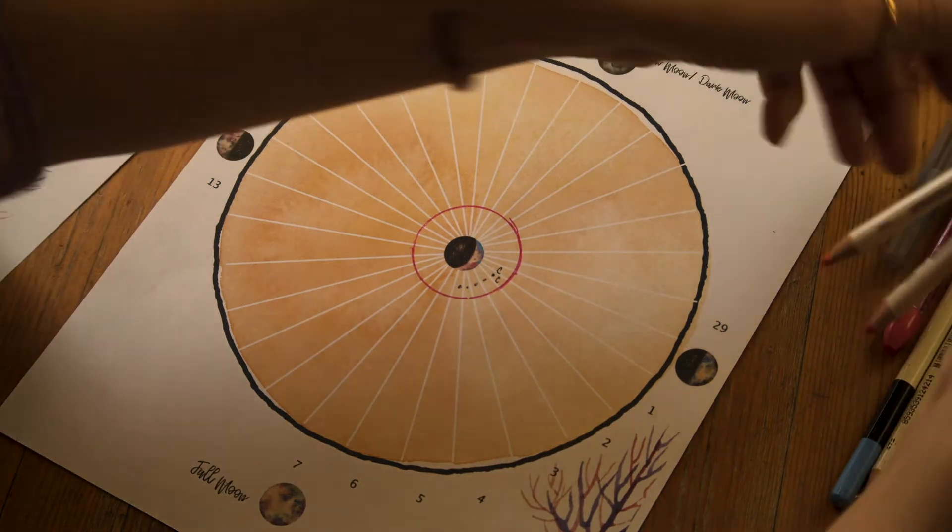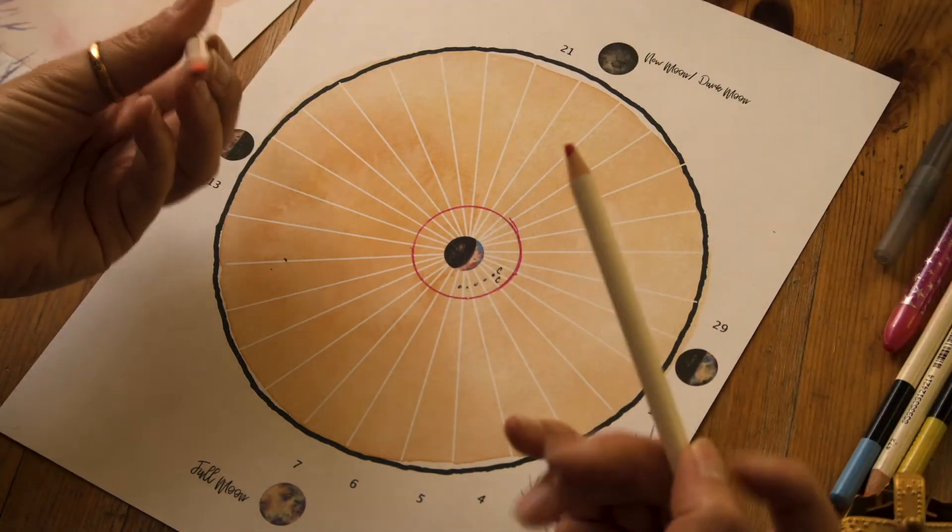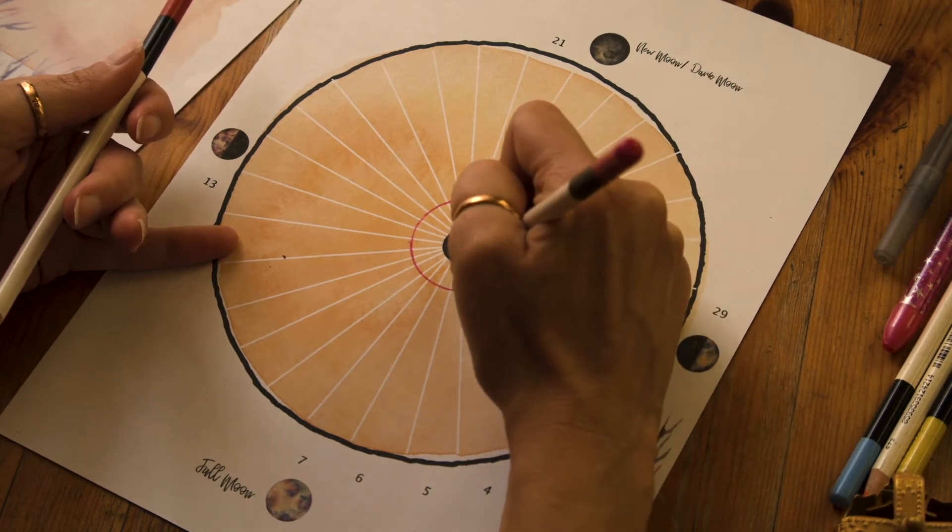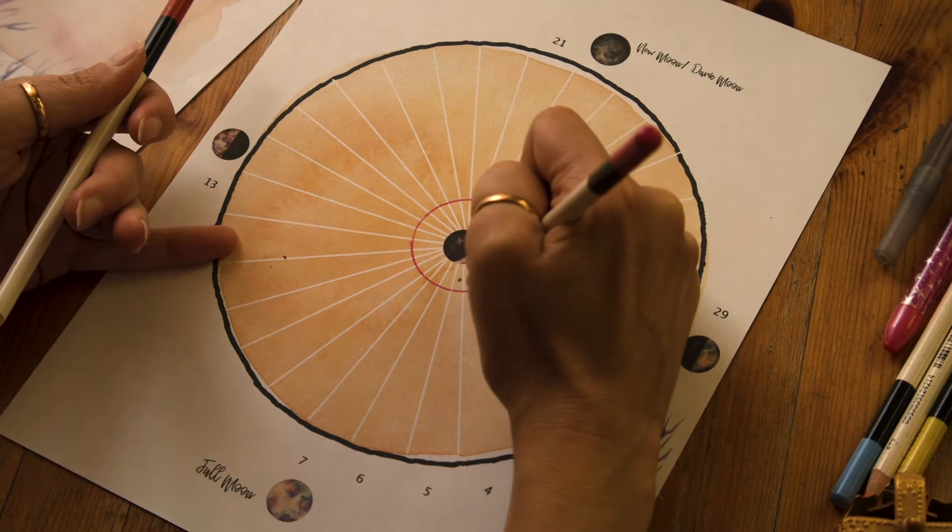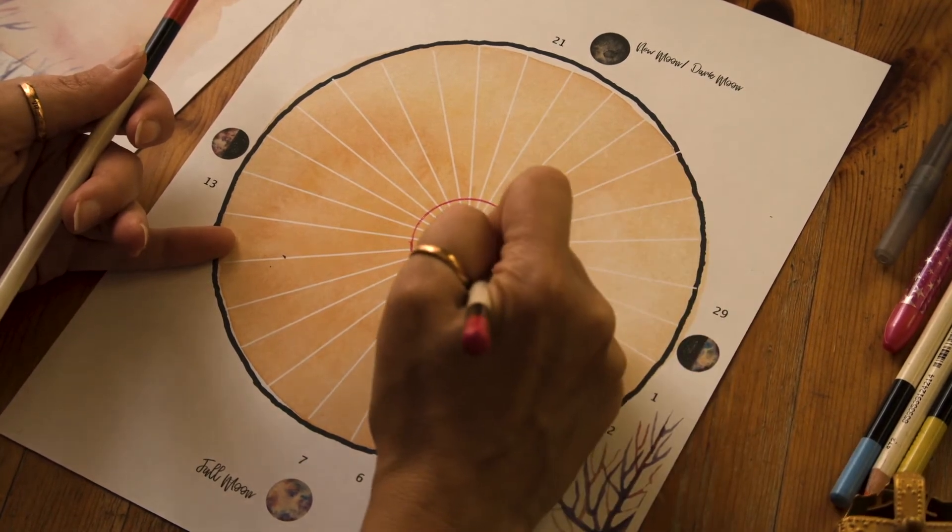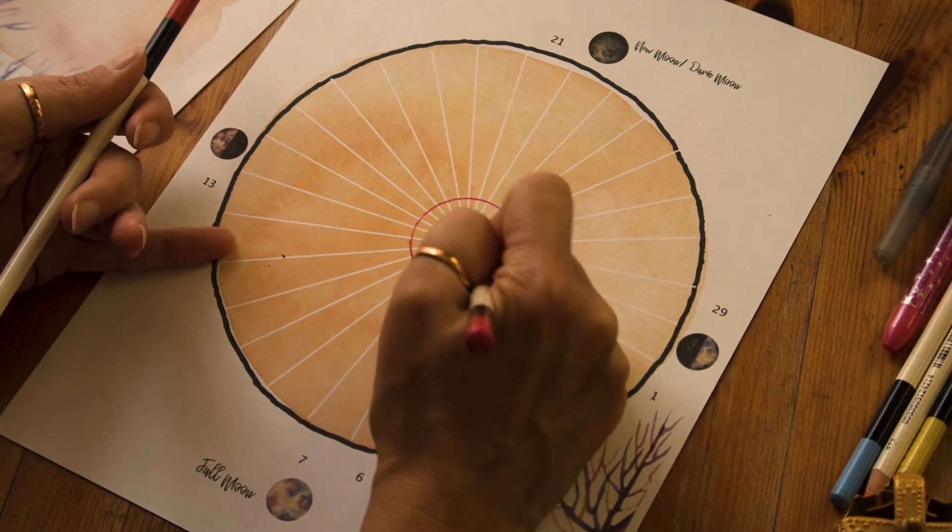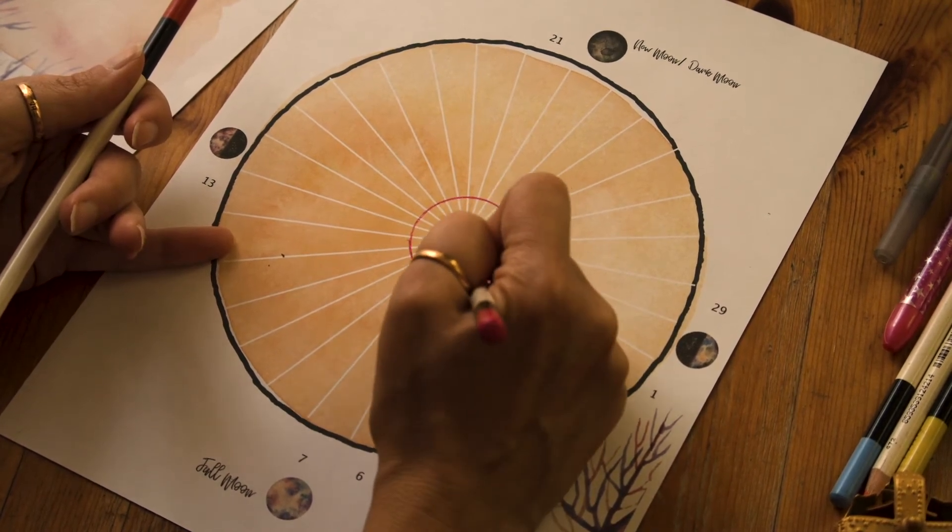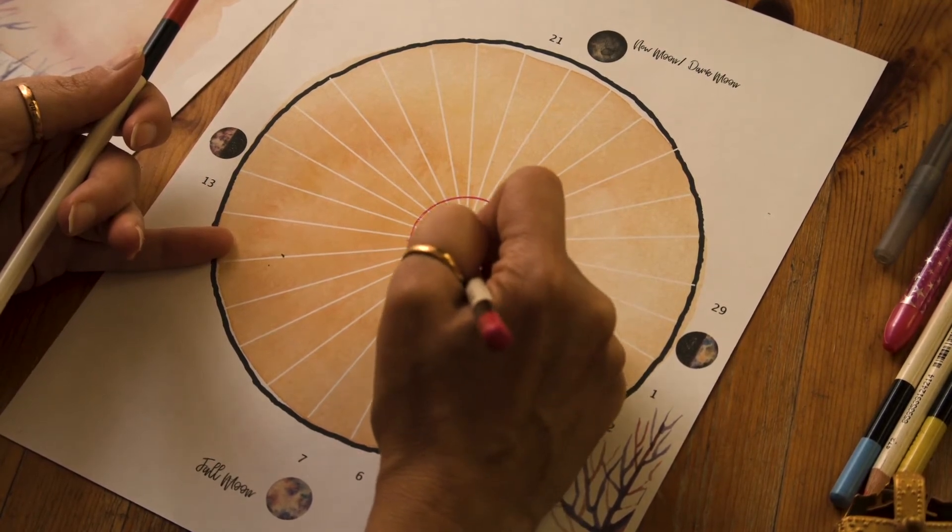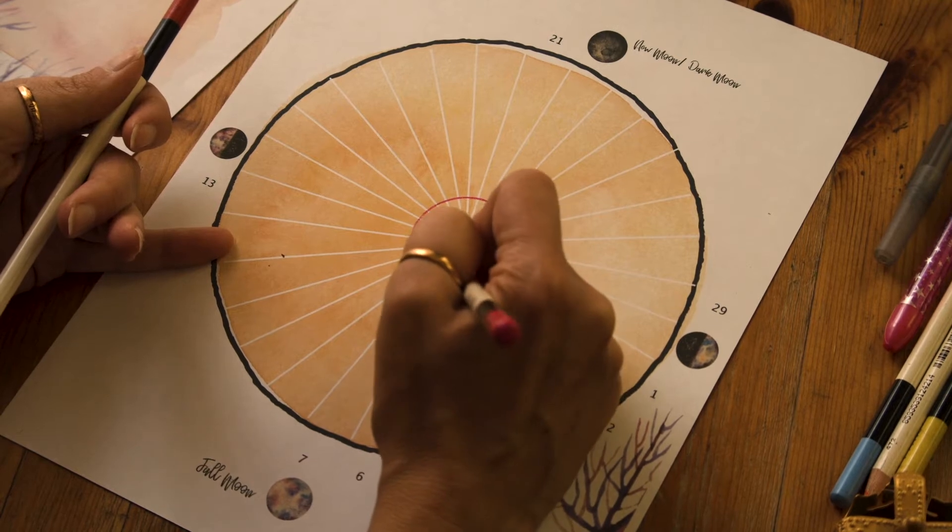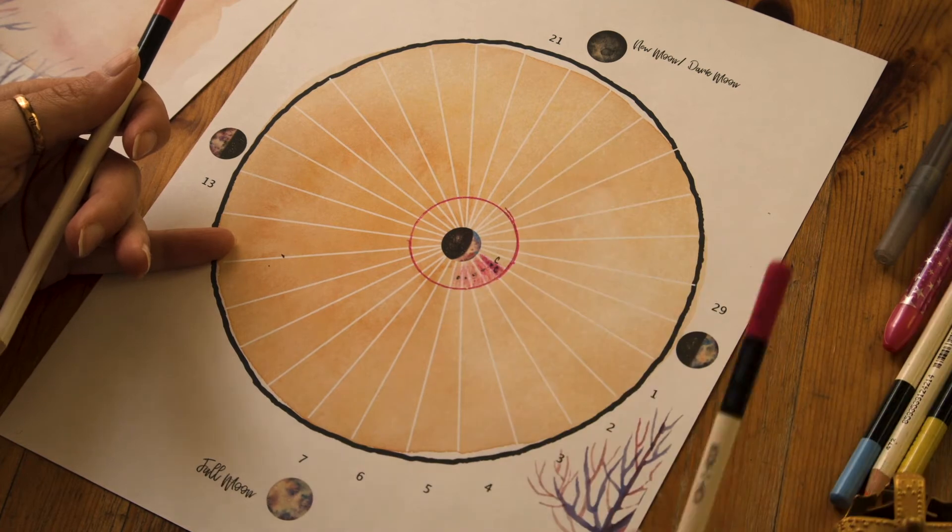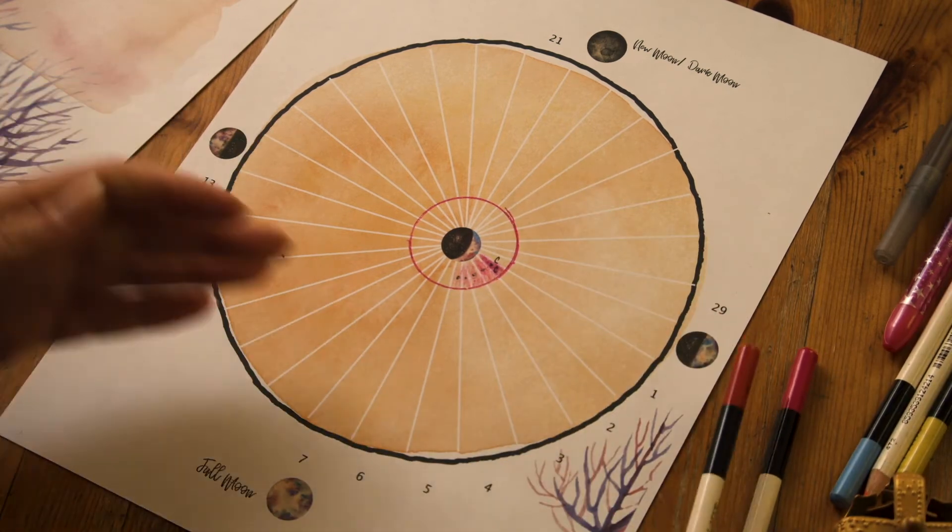So I can put a C here or a C here. The other way you can denote it if you like is by using colors. Maybe the strongest day starts here, so I would color this in dark, and then the next day would be a little bit lighter, and then the next day a little lighter, and then lighter and lightest.